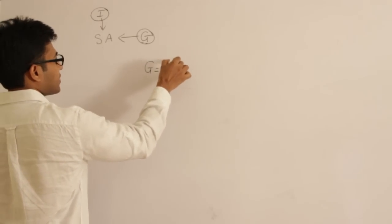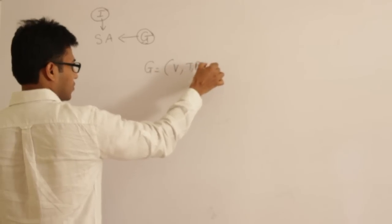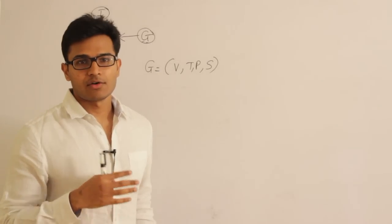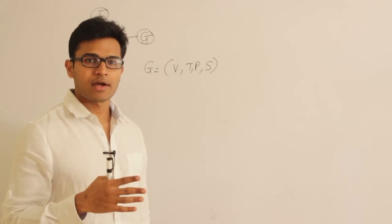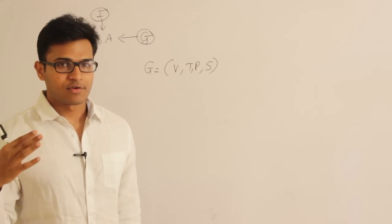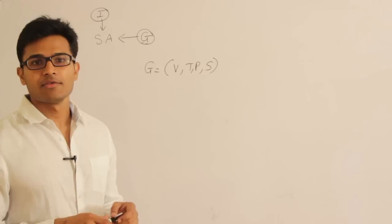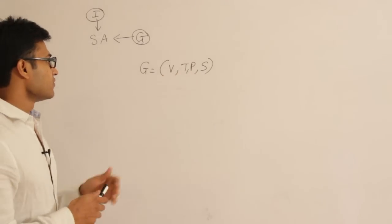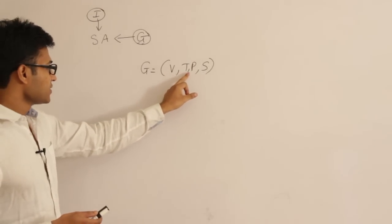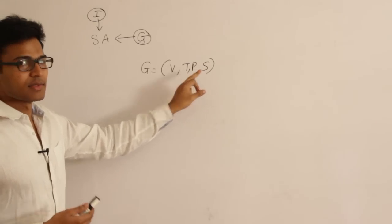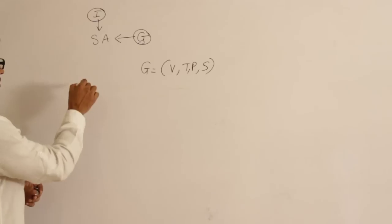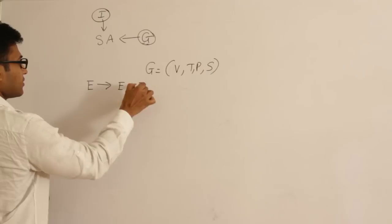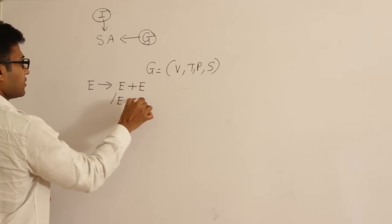Before going to syntax analyzer, let's talk about grammars. A grammar is represented as G = (V, T, P, S). If you are not familiar with grammars or automata theory, it is better to watch the automata videos on grammars first and then come back to this topic. Grammar G = (V, T, P, S) where V is variables, T is terminals, P is productions, and S is the start symbol.